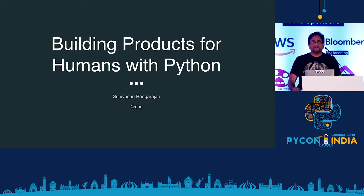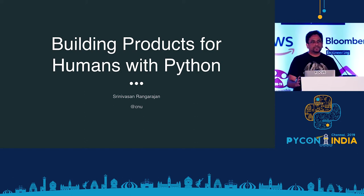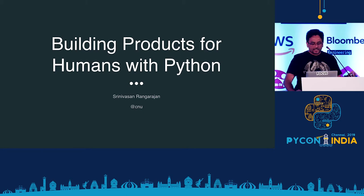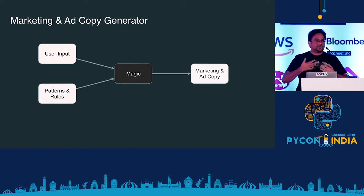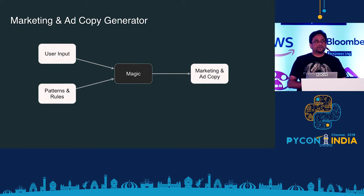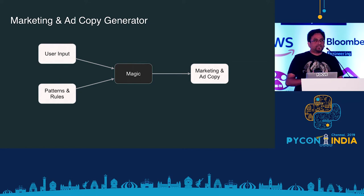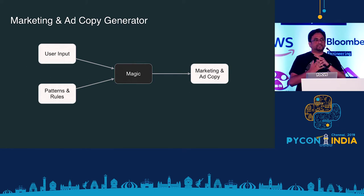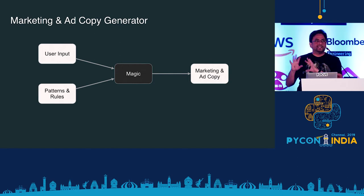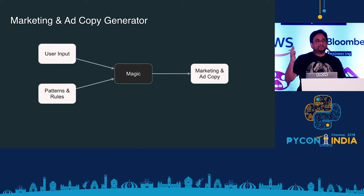Hi, I'm Srini and I'll be talking about building products for humans using Python. I'm a software consultant and I've been working with multiple startups. There was one product I was building which is a marketing ad copy generator — a piece of software which takes in user input, applies a few patterns and rules, and there are a lot of ML and NLP related things in the black box, and out comes the marketing ad or copy.